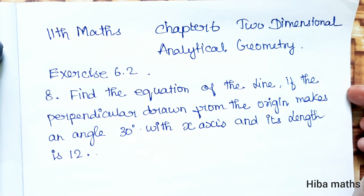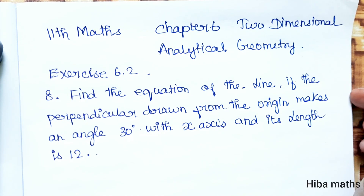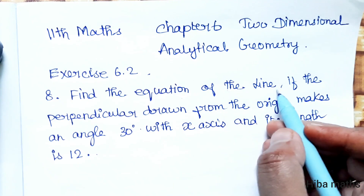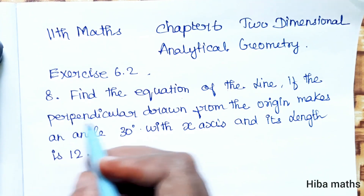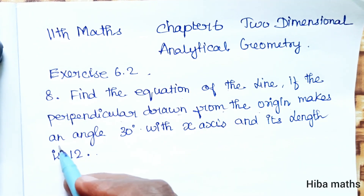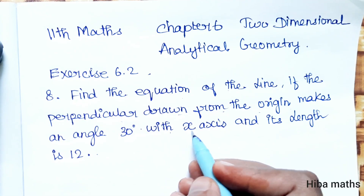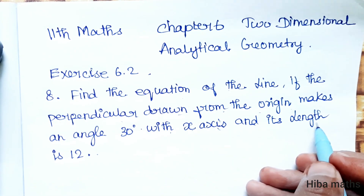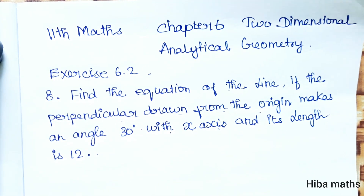Hello students, welcome to Hibamax 11th Standard Max Chapter 6, 2 Dimensional Analytical Geometry. In question 8, we will solve: Find the equation of the line if the perpendicular drawn from the origin makes an angle of 30 degrees with the x-axis and its length is 12.